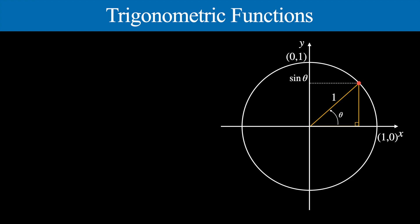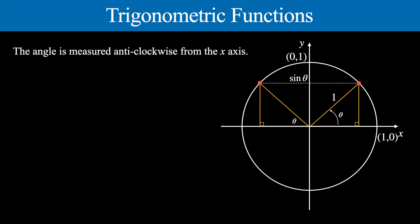Now we could draw a congruent right triangle reflected in the y-axis, with the same angle between the x-axis and the hypotenuse. We can think about the corresponding point on the circle reflected in the y-axis. Since they're congruent triangles the heights will be the same, so this point also has a y-coordinate of sine theta. If we measure the angle of rotation from the x-axis anti-clockwise — that's an important point, the angle is measured anti-clockwise from the x-axis — there's a great video by James Tanton about the history of the unit circle which I'll link in the description explaining why we do this.